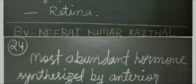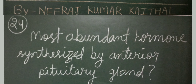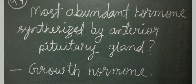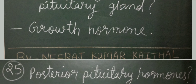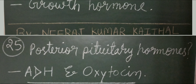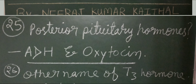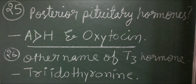Most abundant hormone synthesized by the anterior pituitary gland: growth hormone. Posterior pituitary hormones: antidiuretic hormone (also known as vasopressin) and oxytocin. These two hormones are secreted by the posterior pituitary gland. Question number 26: other name of T3 hormone — triiodothyronine.